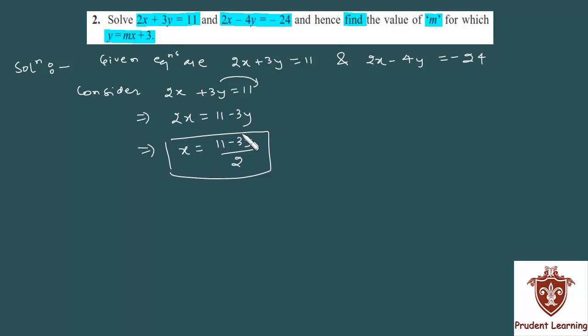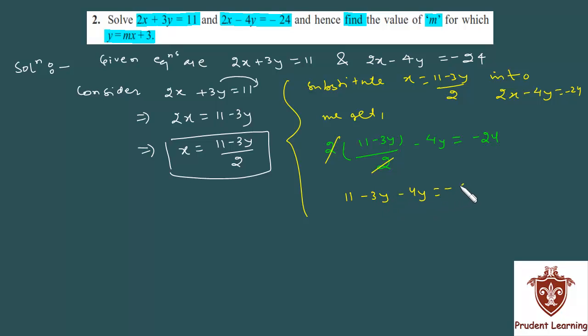Now, substituting the value of x in equation 2 will get the whole equation in terms of y. We can write substitute x is equal to 11 minus 3y over 2 into equation 2 which is 2x minus 4y is equal to minus 24. We get twice of x is 11 minus 3y over 2 minus 4y as such is equal to minus 24, which is equal to 11 minus 3y minus 4y is minus 7y is equal to minus 24.